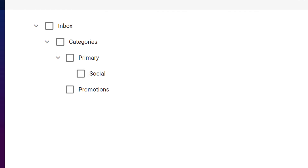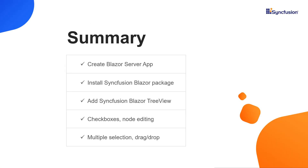If you need more information about the Syncfusion Blazor TreeView component, you can refer to our online documentation. A link is provided in the description of this video. Finally, let me summarize the main points. I have explained the steps to add the Syncfusion Blazor TreeView component with data to a Blazor server application. After that, I explained how to enable checkboxes, node editing, multiple selection and drag and drop features. You can download this fully featured example from the link provided in this video's description. If you found this video useful, click the like button and subscribe to our channel to get notifications about new videos. Thanks for watching.